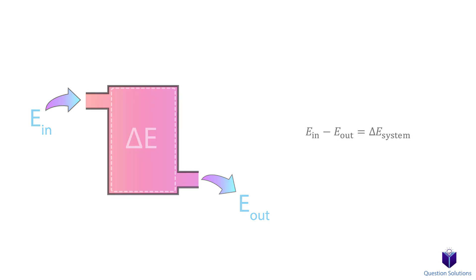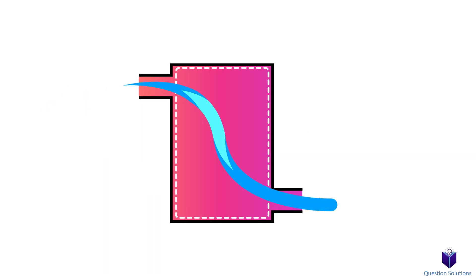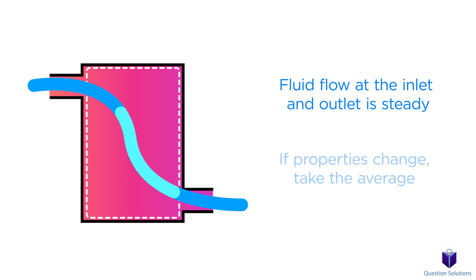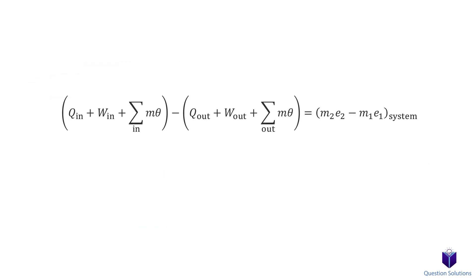Solving problems can be difficult with unsteady flow processes because the mass at the inlets and outlets can change over time. To make our lives easier, we can solve problems by assuming it to be a uniform flow process. We have to make a few assumptions to do so. First, we assume that the fluid flow at the inlet or exit is uniform and steady. That means the properties of the fluid won't change with time or with the cross-section of the inlet or outlet. If they do change, we average it out and treat it as a constant for the entire process.